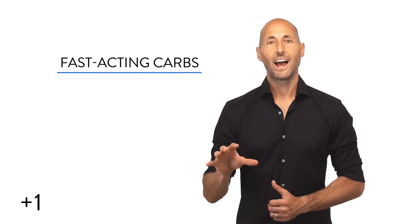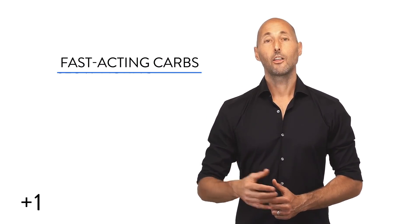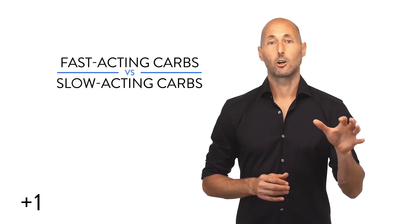So, in his great book, Always Hungry, he tells us about some powerful research. Get this. You can bring people into a lab and have them drink a milkshake that's identical in every way but one. One shake has fast-acting carbs and the other has slow-acting carbs.